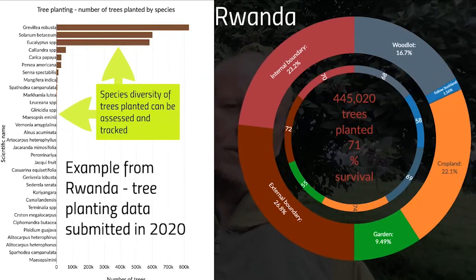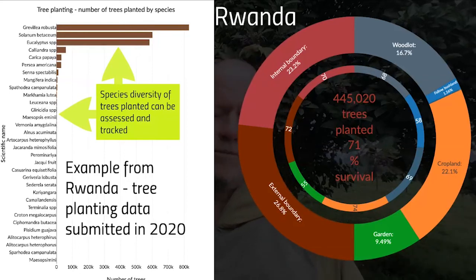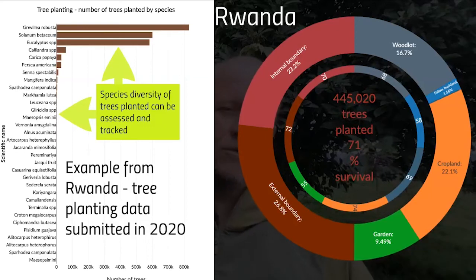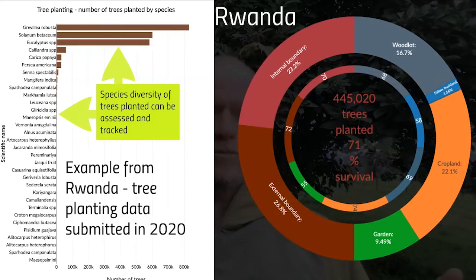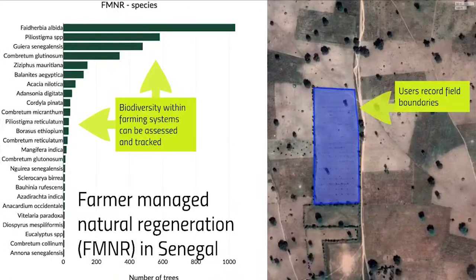This example is for Rwanda, but we can also look at where things are being planted — for example, is it on an internal boundary, is it in woodlots, is it in home gardens and croplands, etc.? All of that is really critical information for land restoration.